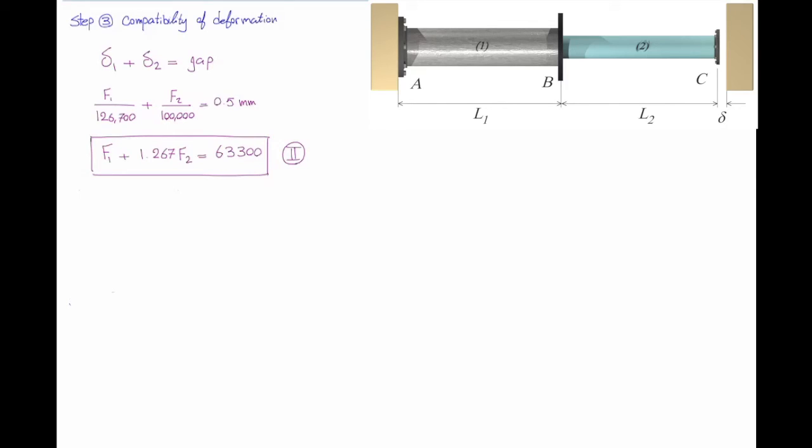Now we get two equations and two unknowns and we can solve it for internal force. This is what we do in the fourth step. So combining 1 and 2 gives us 2.267 F1 equal to 63,300 and F1 would be equal to F2, and that is equal to 27,900 newtons.